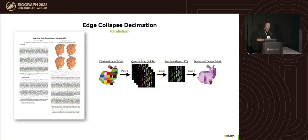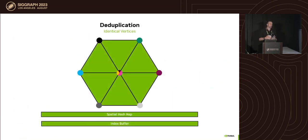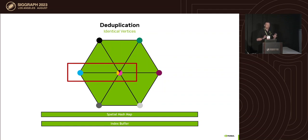Some people have tried to parallelize this by clustering models — separating the model, processing in parallel, and stitching back together. That's not what we're doing, but it's worth mentioning. Now let's get into technical details. When you have a mesh made of an index buffer and vertex buffer, you may have duplicates, and you cannot afford those otherwise you'll get artifacts.